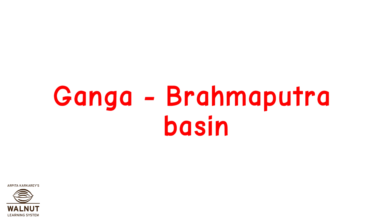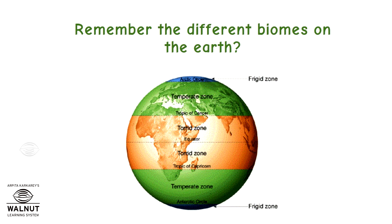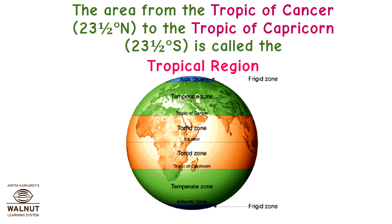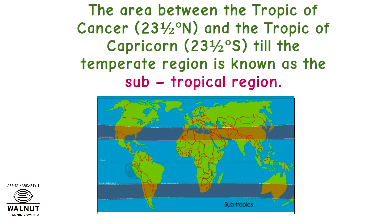Ganga Brahmaputra Basin. Remember the different biomes on the earth? The area from the Tropic of Cancer, that is 23.5 degrees north, to the Tropic of Capricorn, that is 23.5 degrees south, is called the tropical region. Between the tropics and the polar circles is the temperate region. The area between the Tropic of Cancer and the Tropic of Capricorn till the temperate region is known as the subtropical region.